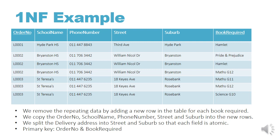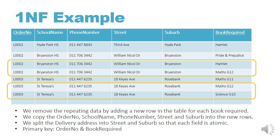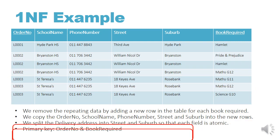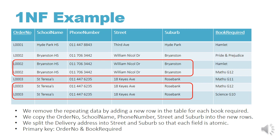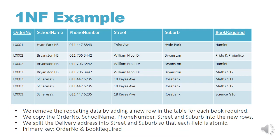I have removed the repeating data by adding a new row in the table for each book required. In order L0002, Bryanston High School had three books — Pride and Prejudice, Hamlet, and Maths Grade 12 — so we've created two new rows for Hamlet and Maths Grade 12. We've done the same for St. Teresa's, who had three books: Maths Grade 11, Maths Grade 12, and Science Grade 10. We copied the data for each school into the new rows, split the delivery address into street and suburb so each field is atomic, and chose the order number and book required together as the primary key.